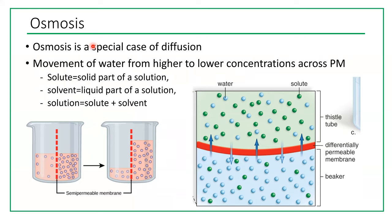Osmosis is a special case of diffusion in which water moves across a cell membrane — specifically the movement of water from a higher concentration of water to a lower concentration of water across the plasma membrane. A solution consists of a solute and a solvent. Here the solute is the solid part of the solution, and the solvent is the liquid part, though solutes can be liquid or gas as well.